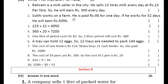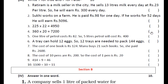True/False Q2: Sukhi works on a farm. He is paid rupees 98 for one day. If he works for 52 days, he will earn rupees 5096. 52 days की salary निकालने के लिए 52 into 98 करिए. अगर 5096 rupees आता है तो statement true है, नहीं आता है तो false. Q3: 225 into 22 equal to 4950. आप 225 में 22 का multiply करिए. अगर 4950 आता है तो true है, नहीं तो false.